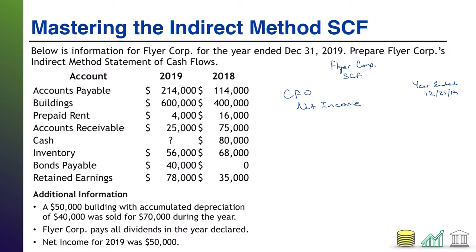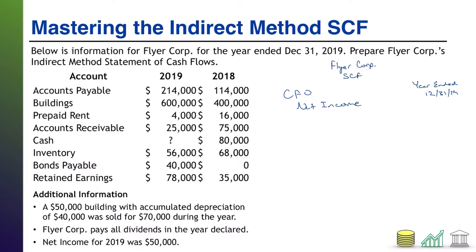Net income for 2019, looking at the given information at the bottom, was $50,000. Now before I proceed - that's just the basic start for every indirect method statement of cash flows. Before I keep going, I'm going to do some 'cleaning up' of the given information, which is going to help us process this a little more efficiently.